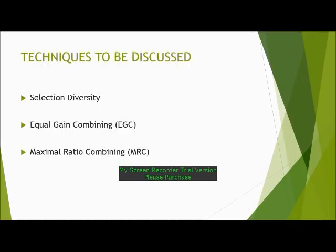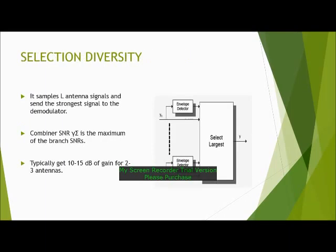In this presentation, we will be discussing three diversity combining techniques: selection diversity, equal gain combining, and maximum ratio combining. Let's start with selection diversity. In this technique, if there are L antenna signals, then only the strongest signal reaches the receiver. It samples L antenna signals and sends the strongest signal to the demodulator.